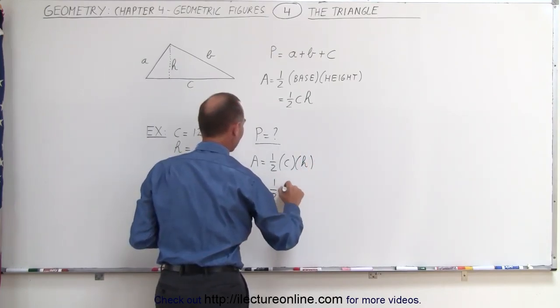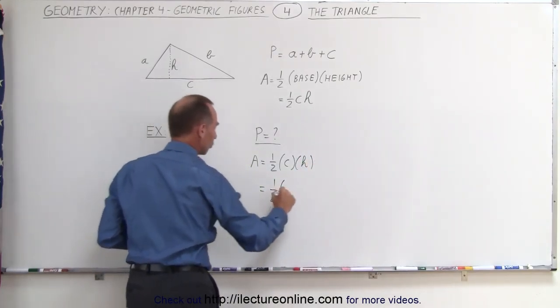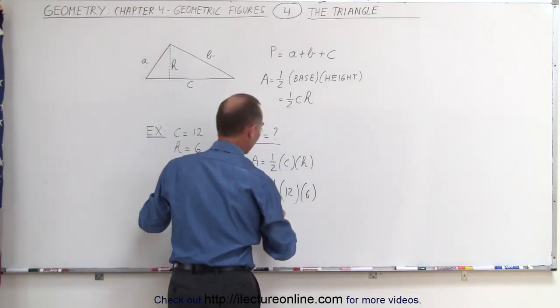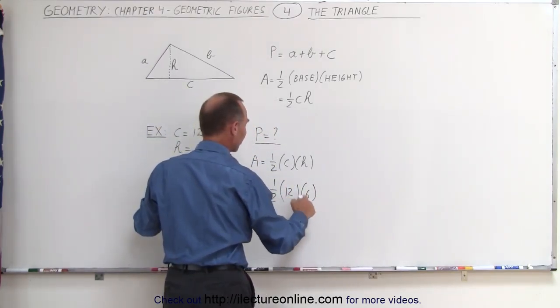So in this case, that's one-half times, in this case, C is equal to 12 and H is equal to 6. So one-half times 12 is 6. 6 times 6 is 36.